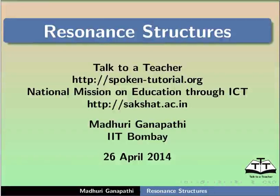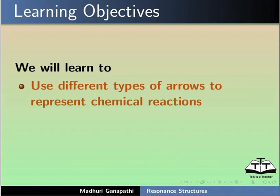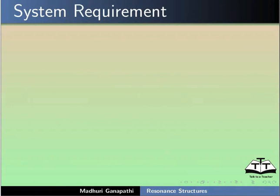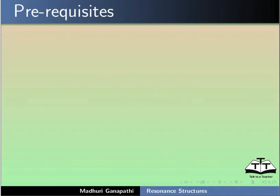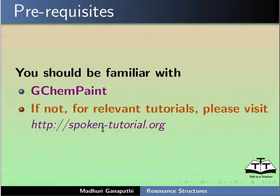Hello everyone, welcome to this tutorial on resonance structures in GCamPaint. In this tutorial, we will learn to use different types of arrows to represent chemical reactions and add charge and electron pairs on an atom. For this tutorial, I am using Ubuntu Linux OS version 12.04, GCamPaint version 0.12.10. To follow this tutorial, you should be familiar with GCamPaint. If not, for relevant tutorials, please visit our website.